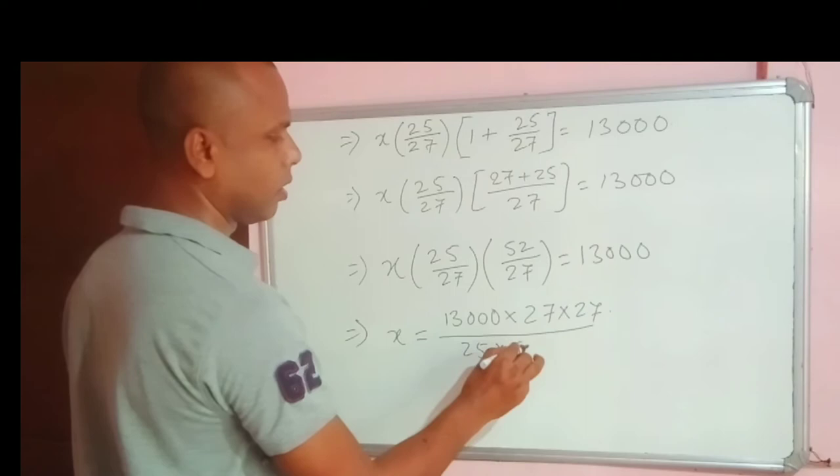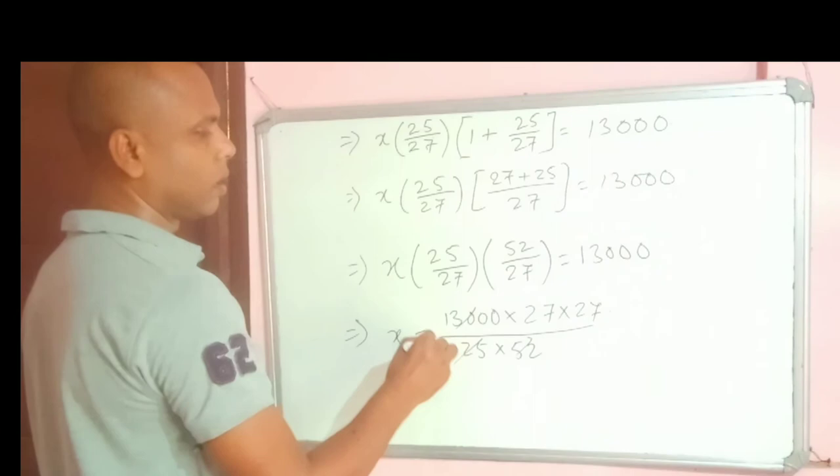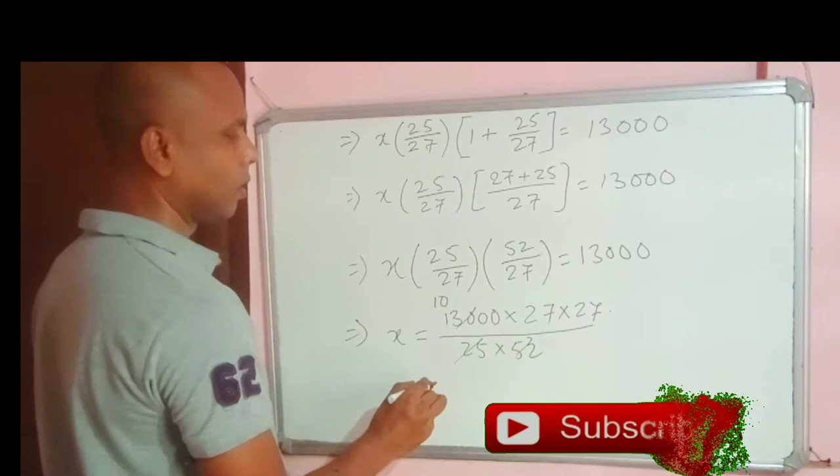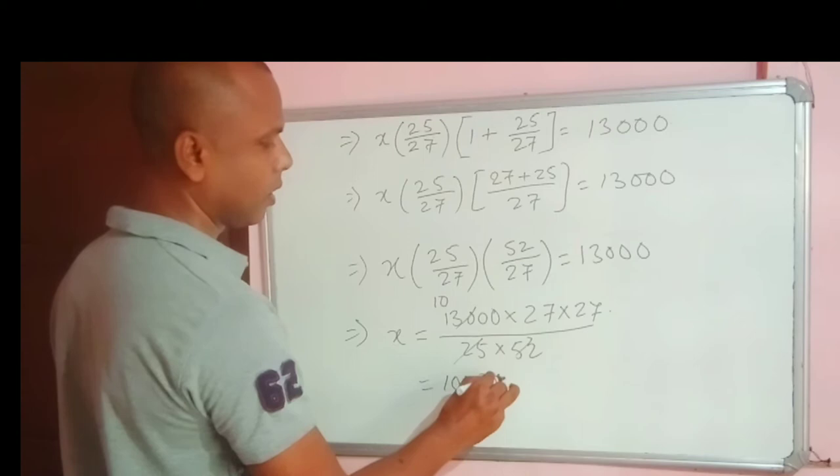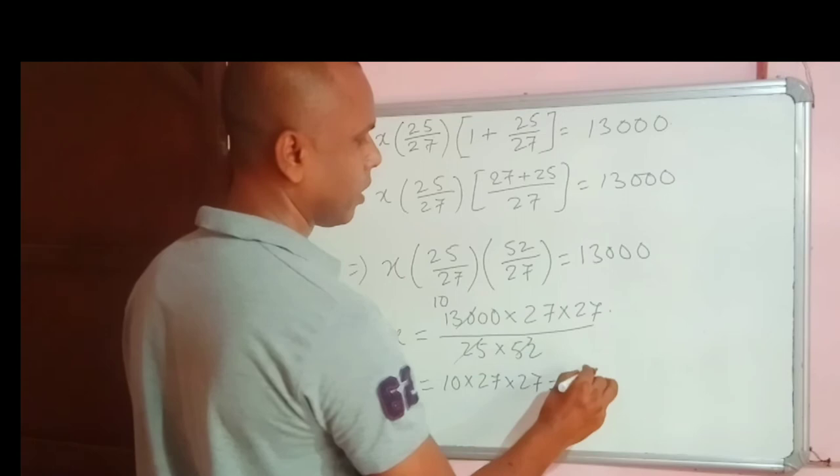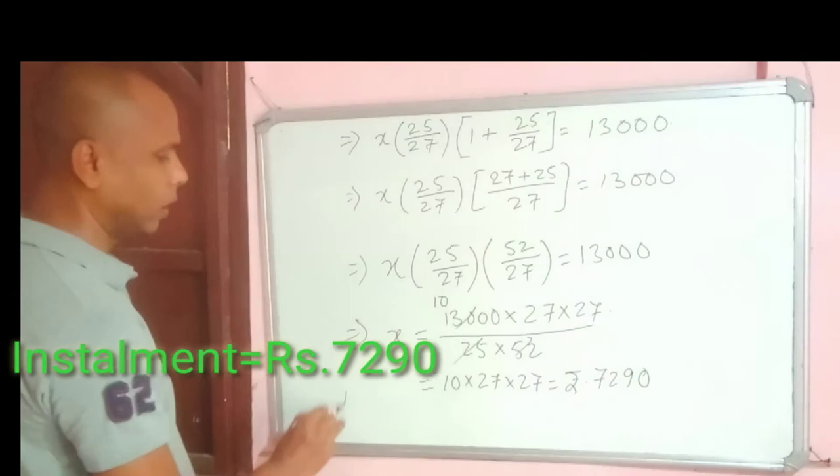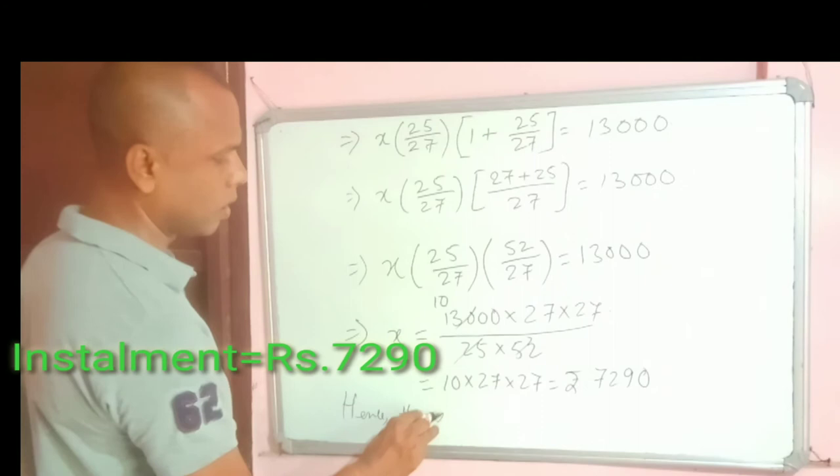So 25 into 52 is 1,300, 10 times. So we are having here 10 into 27 into 27 which is equal to rupees 7290. Hence the required installment is rupees 7290.